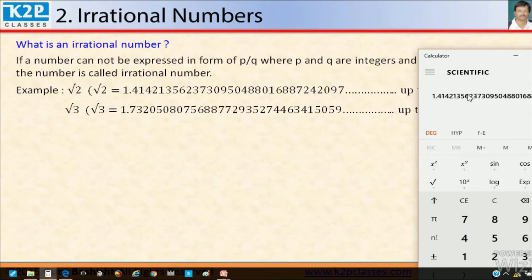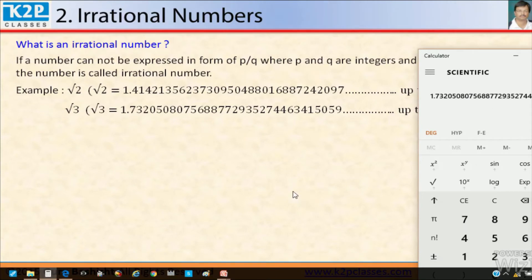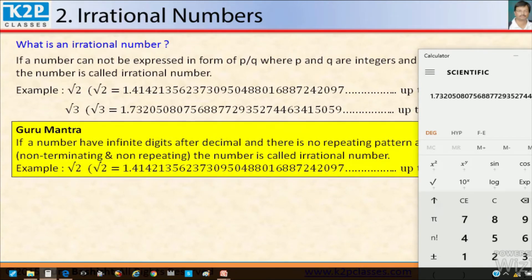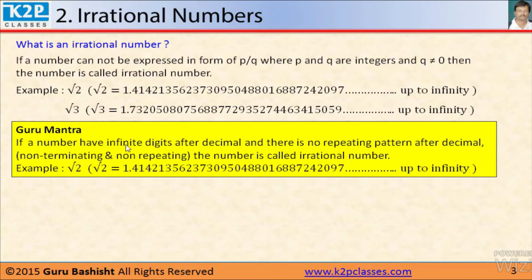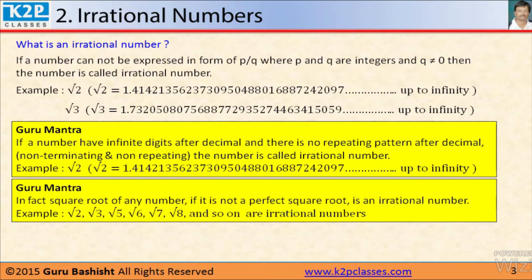So that is why root 2 is an irrational number. Similarly, root 3 also goes up to infinity and it is not repeating and neither terminating, so it is an irrational number. In nutshell, if a number has infinite digits after the decimal and there is no repeating pattern — non-terminating and non-repeating — the number is called an irrational number. In fact, the square root of any number, if it is not a perfect square, is an irrational number. For example, root 3, root 5, root 6, root 7, root 8 and so on.